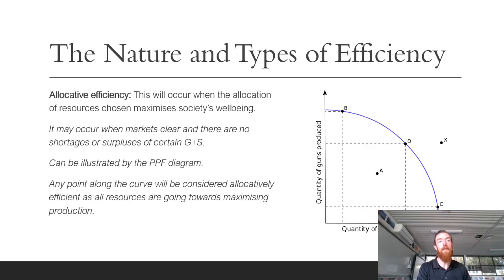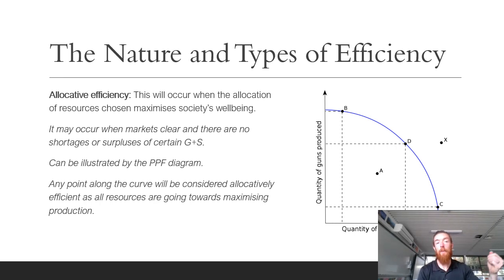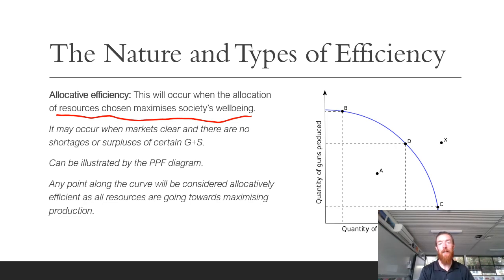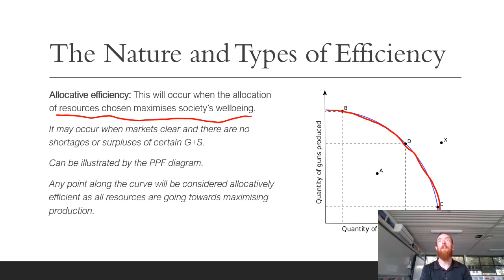Now let's get into the nature and types of efficiency. There are four main types in VCE Economics. Allocative efficiency occurs when the allocation of resources chosen maximizes society's well-being. It occurs when there are no shortages or surpluses of certain goods or services, and it's the only combination of production where living standards are maximized. It can be illustrated on the production possibility diagram — any point along the curve is considered allocatively efficient, because at any point along that curve we are using our resources to maximize production and therefore hopefully maximize living standards.